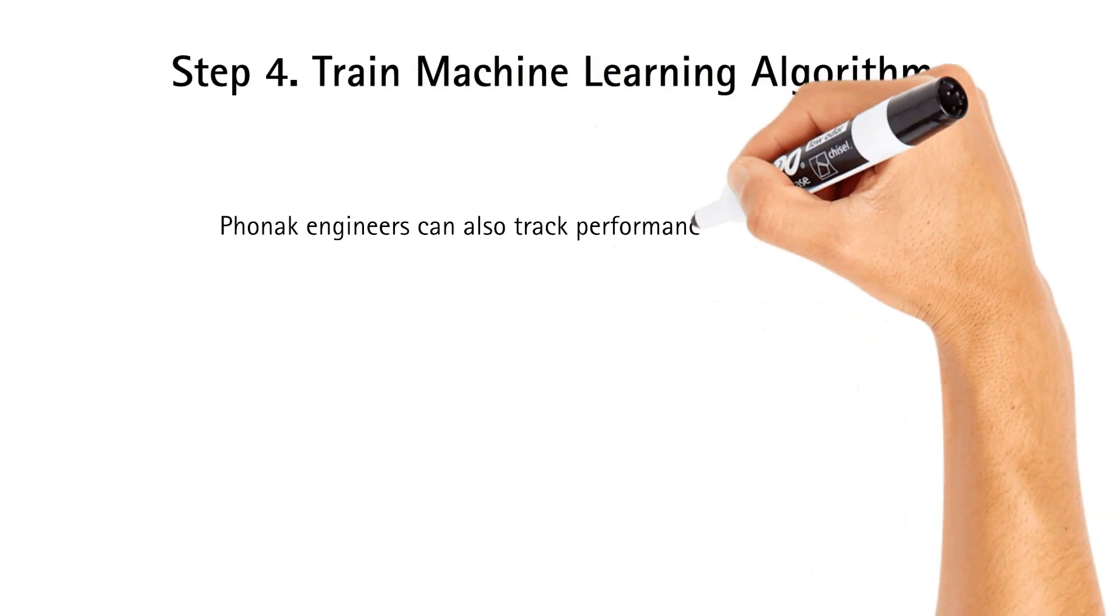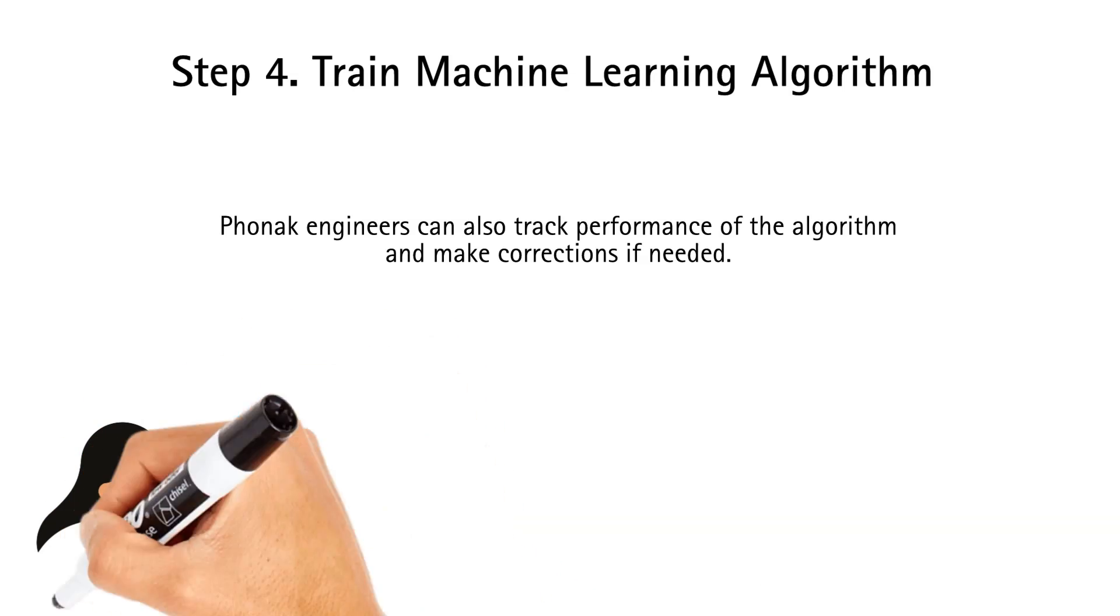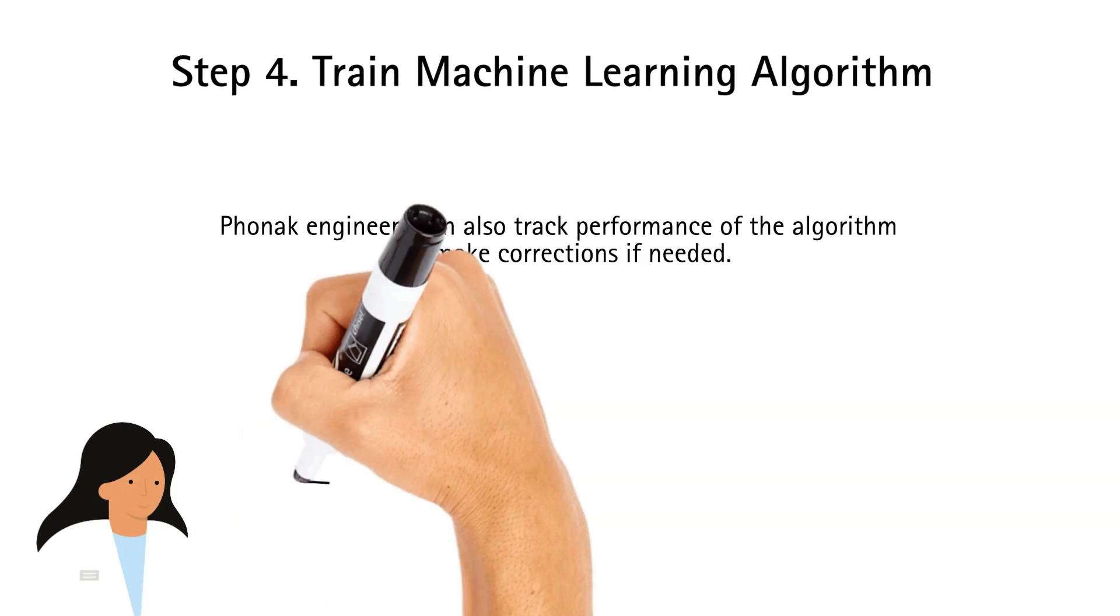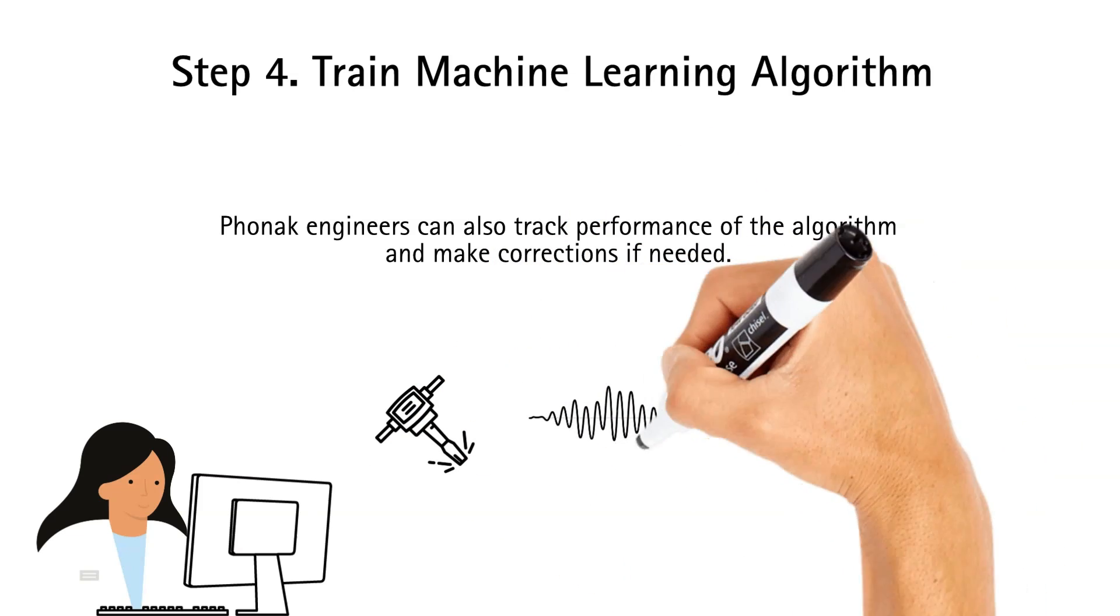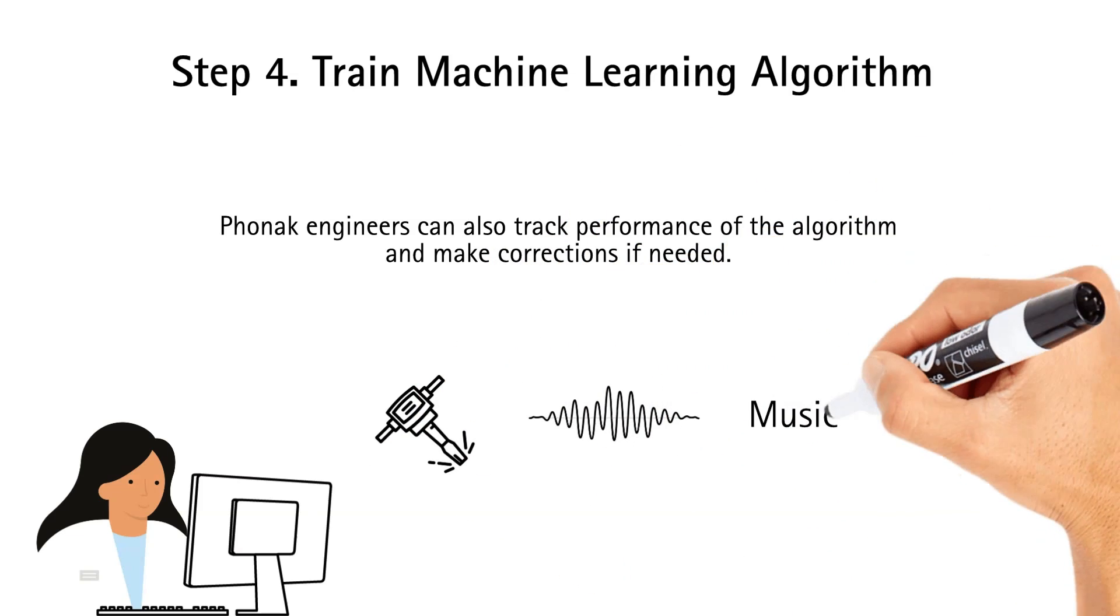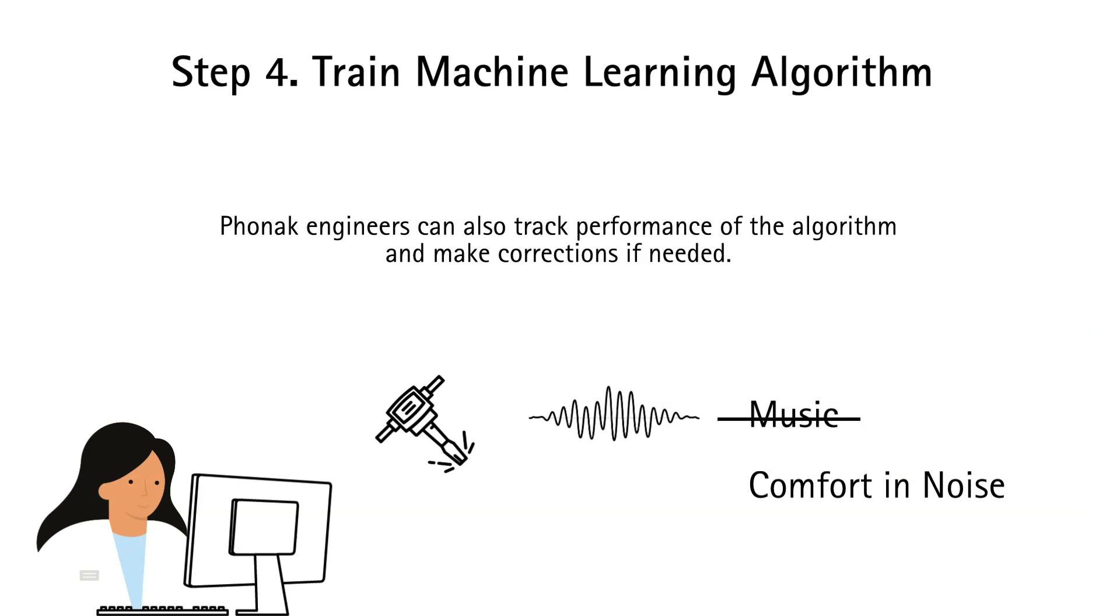Phonak engineers continue to track the performance of the algorithm, and make corrections if needed. So, if, for example, the algorithm incorrectly identifies a jackhammer as loud music, or a siren as a voice, these can easily be rectified by an engineer.